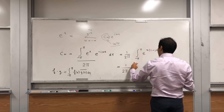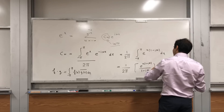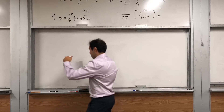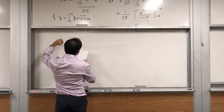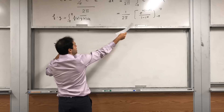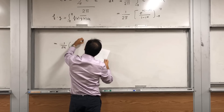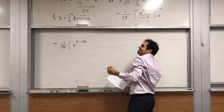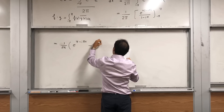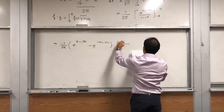And that we can just anti-differentiate. So we get 1 over 2 pi, and the antiderivative is e to the x(1 minus in) over (1 minus in), evaluated from minus pi to pi. That gives us 1 over 2 pi times e to the pi(1 minus in) minus e to the minus pi(1 minus in), all times 1 over (1 minus in).